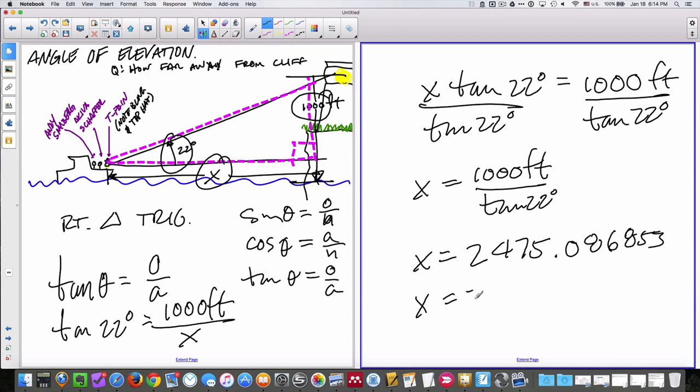And I get 2,475.086853. Rounded to the nearest tenth in this case, 2475.1 feet from the cliff or the lighthouse, depending on what the setup is.